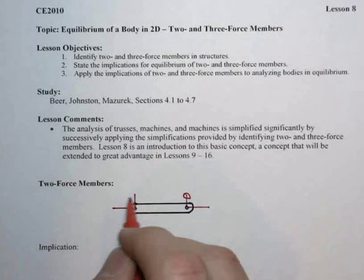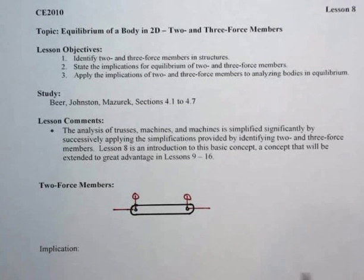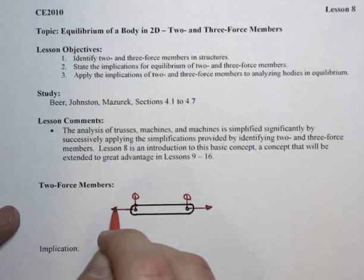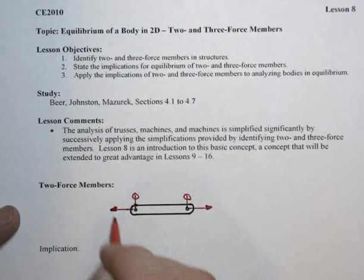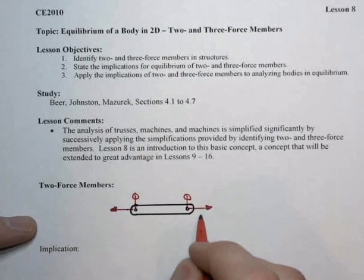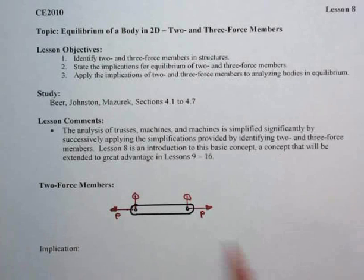And likewise, the other one that's orthogonal has to be zero. And so that means that this member has to either be in a condition where you have the two unknown forces that are left over pulling each other, pulling away, so putting the member into tension. They will have to be equal and opposite. Or, of course, they could be reversed around and be in pure compression as well.